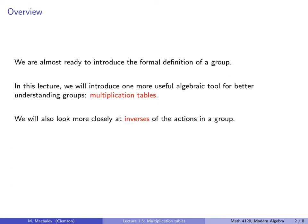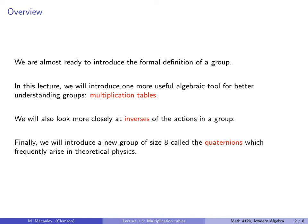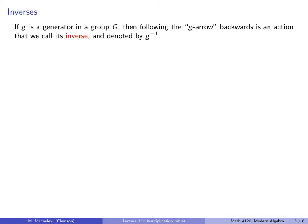We will also look more closely at inverses of the actions in a group. And the last thing we will do is introduce a new group of size 8 called the quaternions, which frequently arise in theoretical physics. So let's start with inverses.